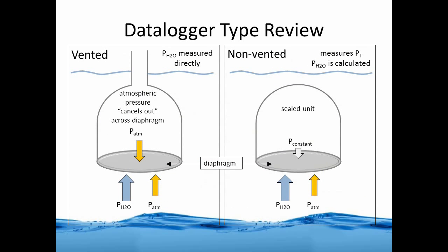Let's review the two primary data logger types: the vented models and non-vented models. On the left, the vented model allows air pressure or atmospheric pressure to be canceled out across the diaphragm. In the non-vented model, there is a constant pressure pushing down from inside the unit against both the water and atmospheric pressure externally.